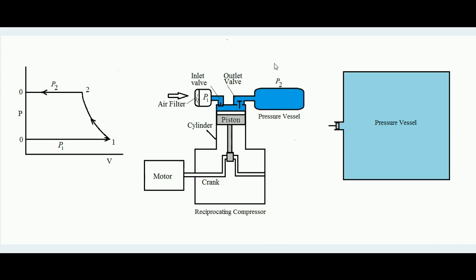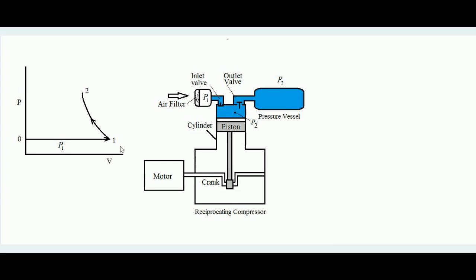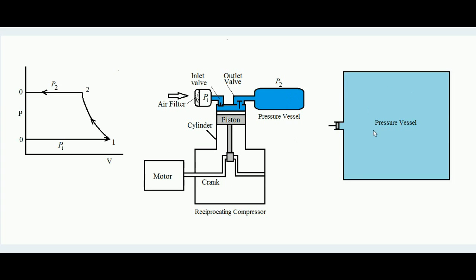After point 2, the further compression is isobaric — at constant pressure — because the pressure vessel's volume is very large compared to the piston-cylinder volume. A small volume of air pushed in from one stroke does not appreciably change the pressure vessel's pressure. So initially compression is adiabatic inside the cylinder; once the outlet valve opens, the further process is isobaric at pressure p2 as air is pushed into the pressure vessel.